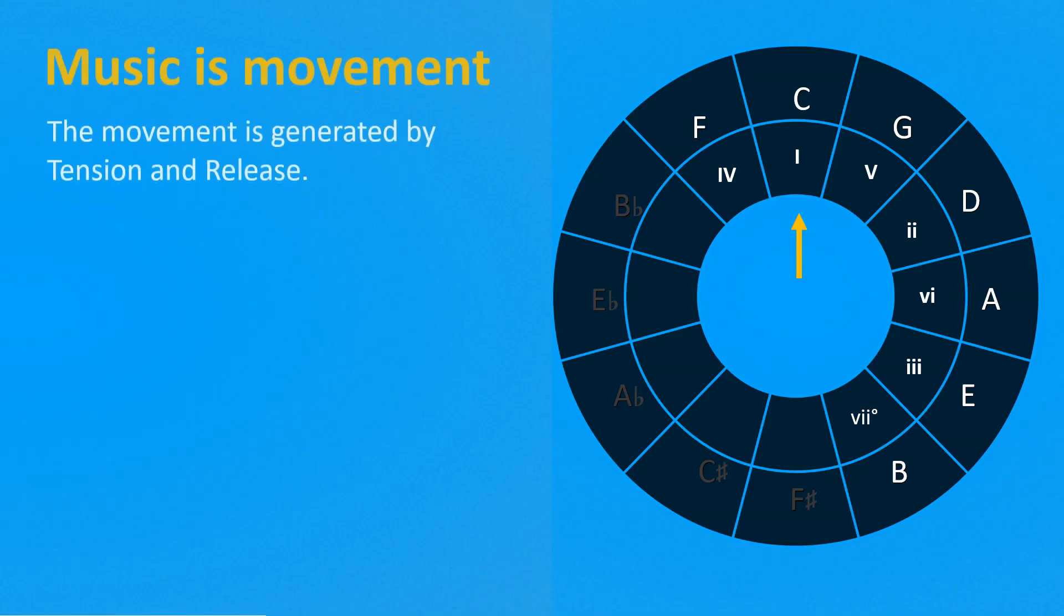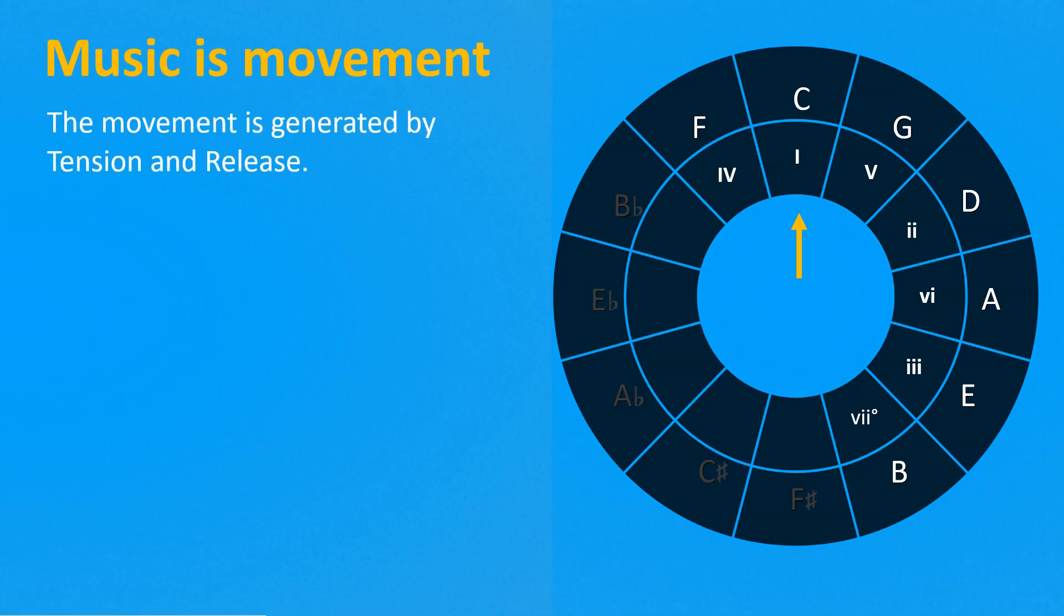Music is movement, and the movement is generated by a succession of moments of tension and release. We have just seen the progression 5-1. The dominant chord, the fifth, generates tension and instability that have to be resolved as soon as possible to the root chord that gives a sense of release. We are at home in the root chord.